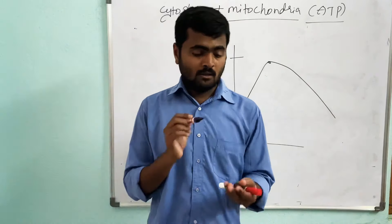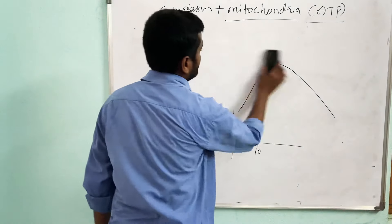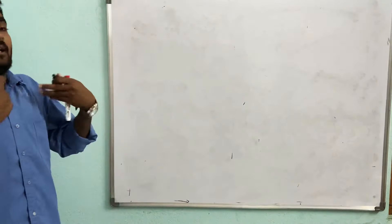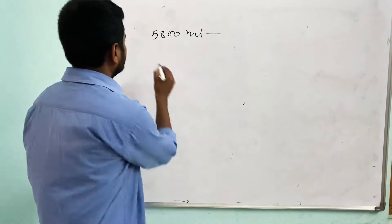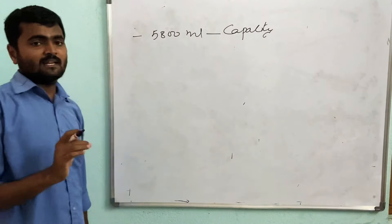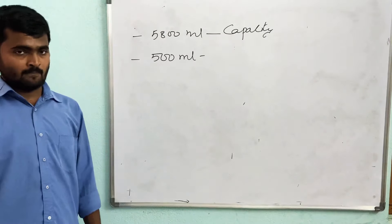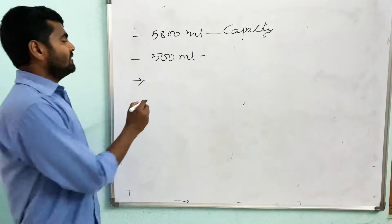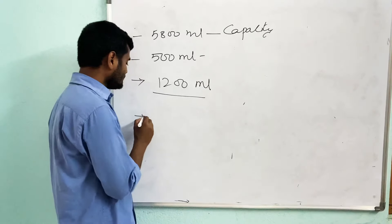The total capacity of our lungs is about 5,800 milliliters. In the normal relaxed position, we take in only about 500 mL of air each breath. If you breathe out completely, the lungs still hold about 1,200 mL of air — that is the residual volume.